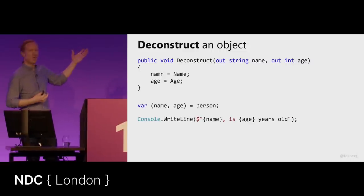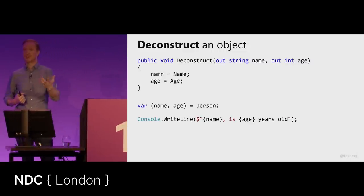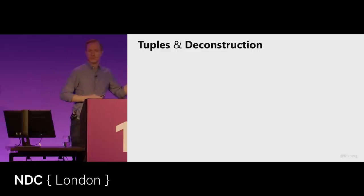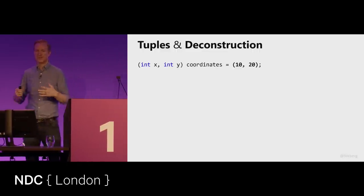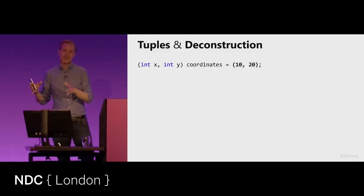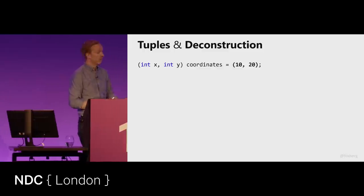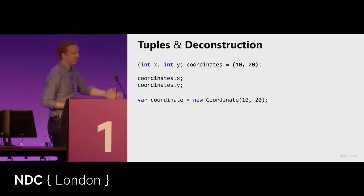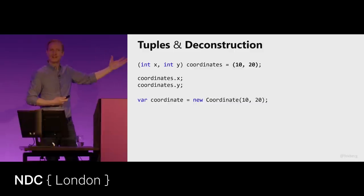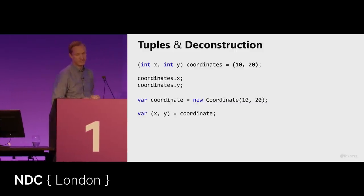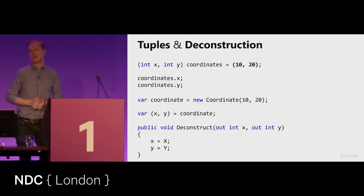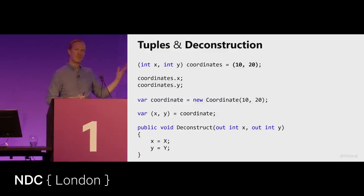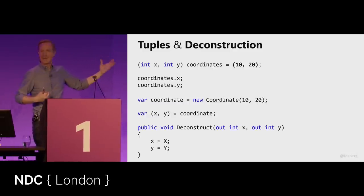On its own this may not seem very useful, but when combined with pattern matching and writing more expressive code it becomes really interesting. Another example: on the right-hand side you declare a tuple and deconstruct it into two new local variables which you can use as properly named types. You can have multiple different Deconstruct methods on your type, allowing you to pull that object apart in different ways — which is powerful when it comes to pattern matching.